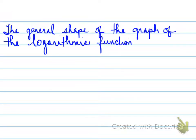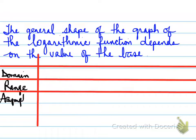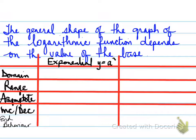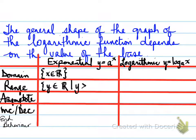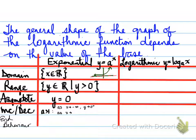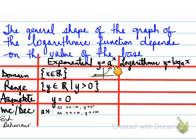The general shape of the graph of a logarithmic function depends on the value of its base. We look at the domain, range, asymptote, whether it increases or decreases, and end behavior. For an exponential, the domain is all real numbers, the range is y greater than 0, and there is an asymptote at y equals 0. When the base is greater than 1, as x approaches negative infinity y approaches 0 from the positive side, and as x approaches positive infinity y approaches positive infinity.